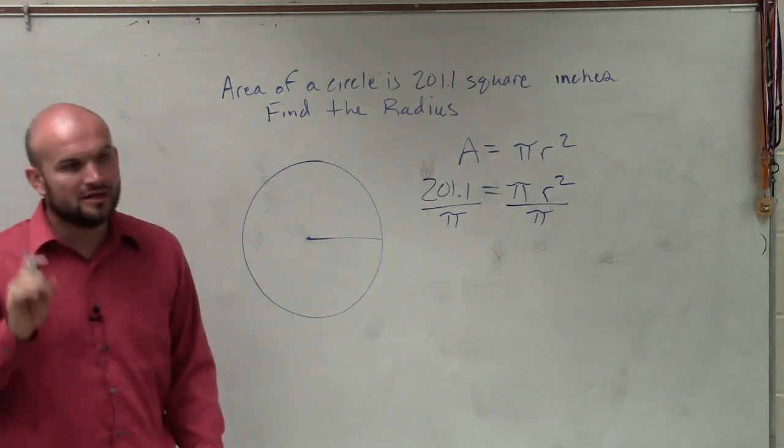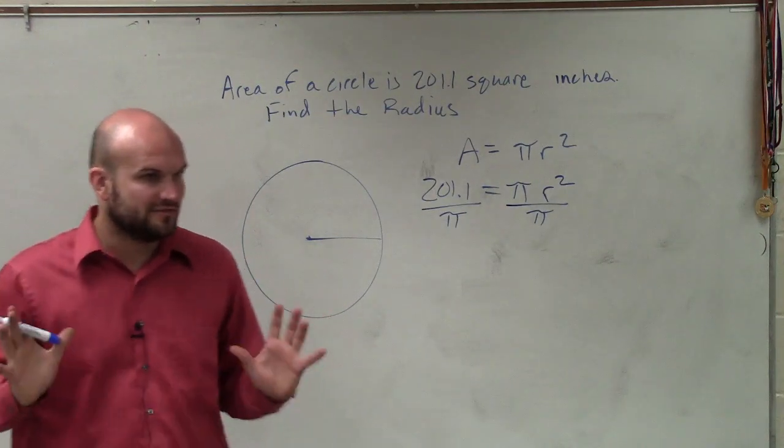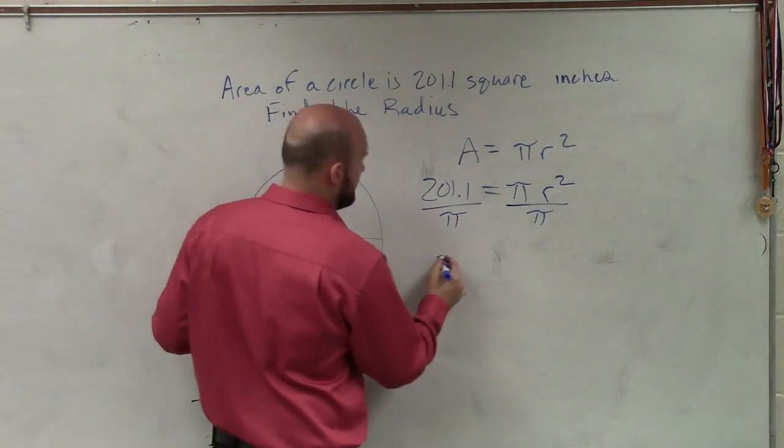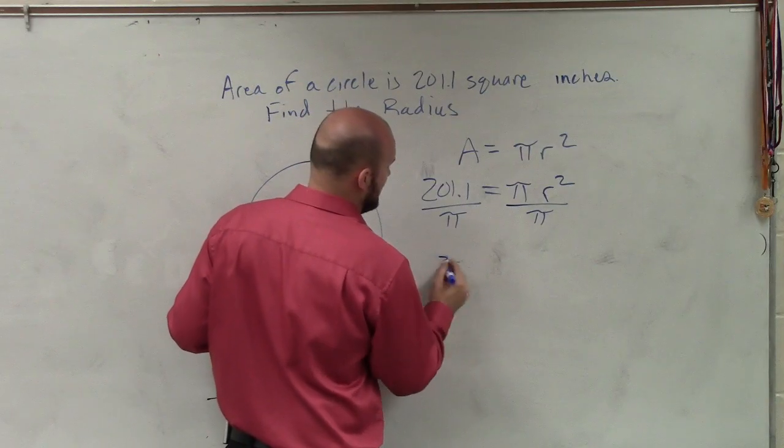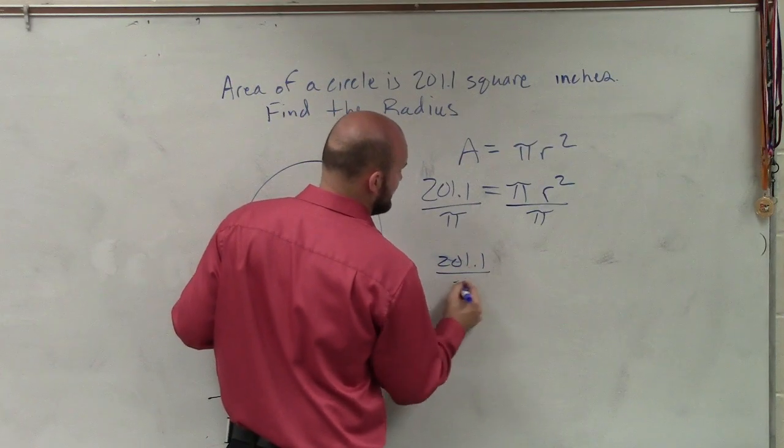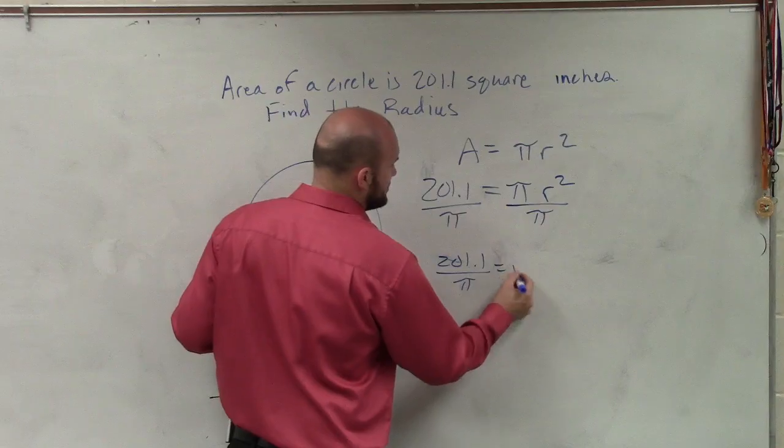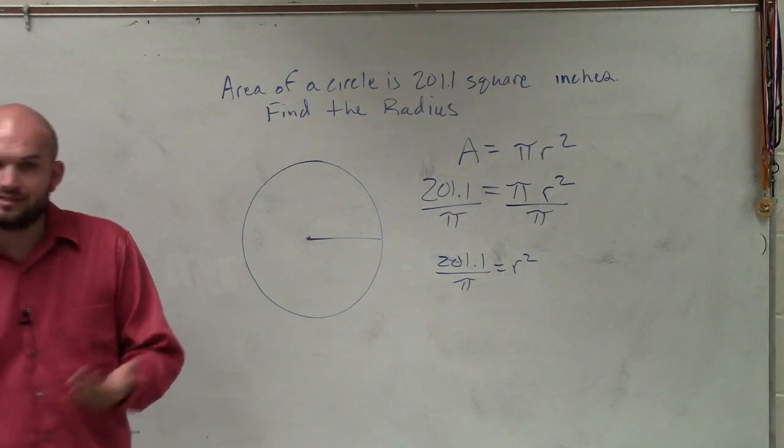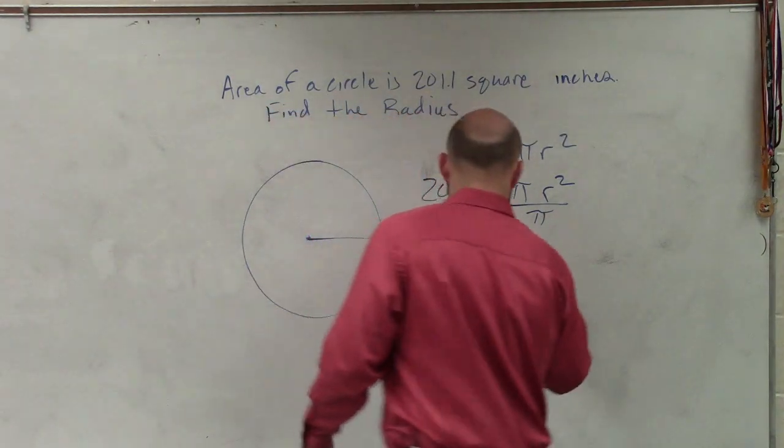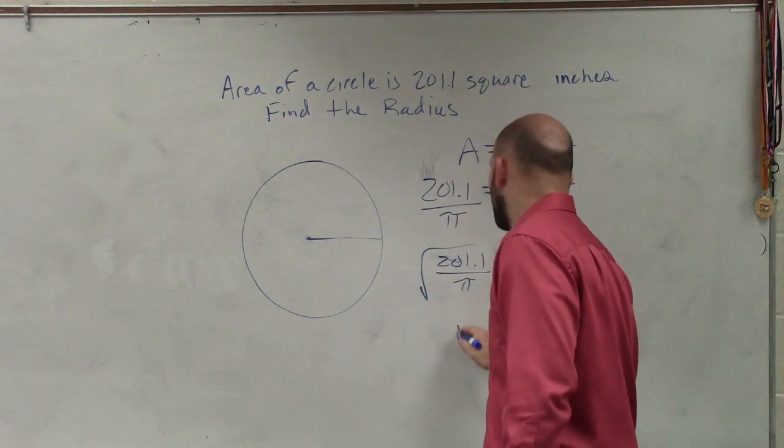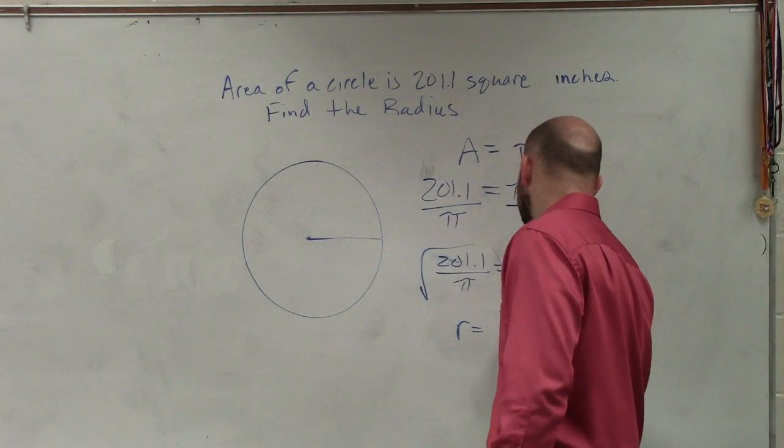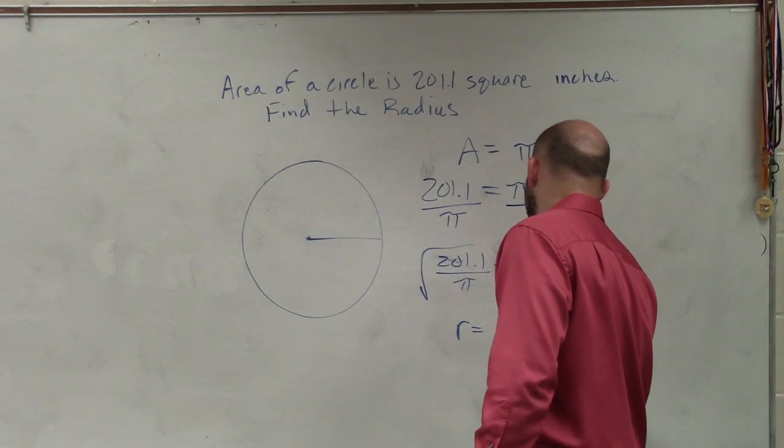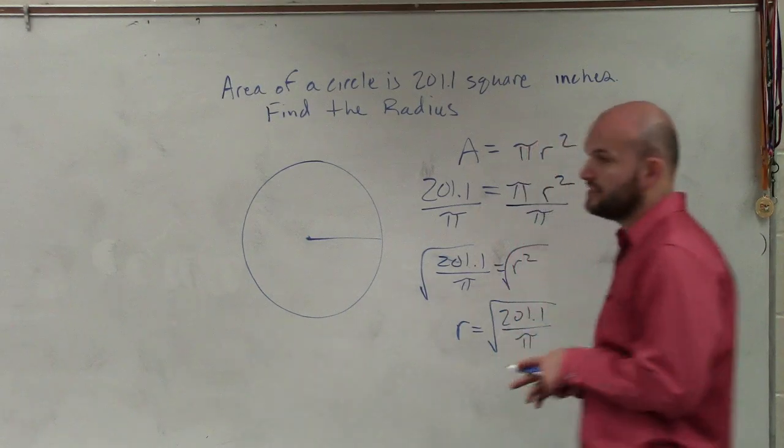And again, ladies and gentlemen, do not approximate till the very, very end. So therefore, I have 201.1 divided by pi equals r squared. So to undo r squared, I need to take the square root on both sides. Therefore, r, my radius, equals 201.1 divided by pi and then square root.